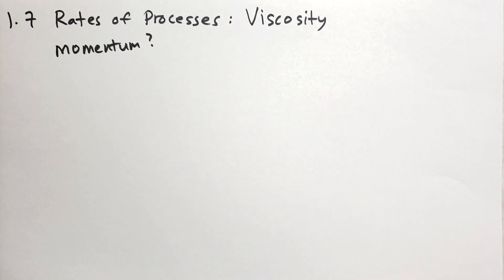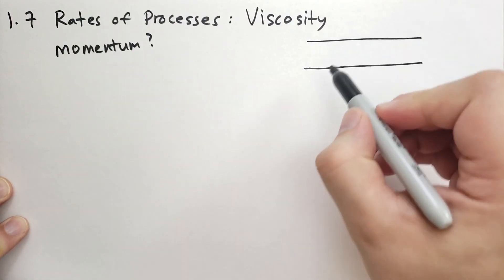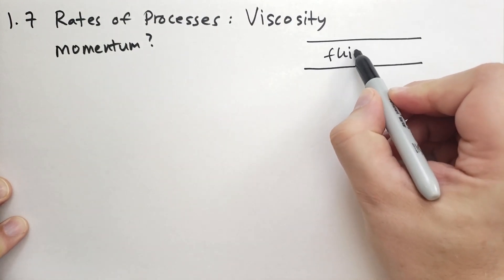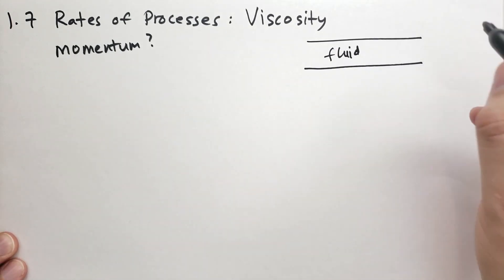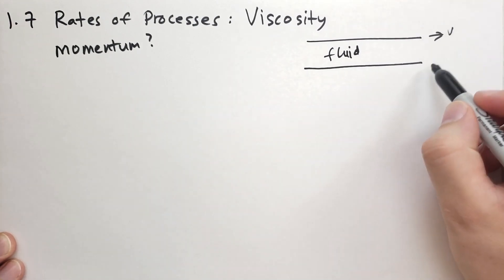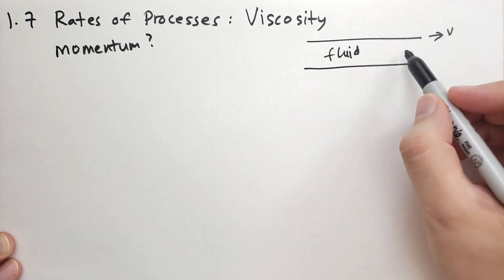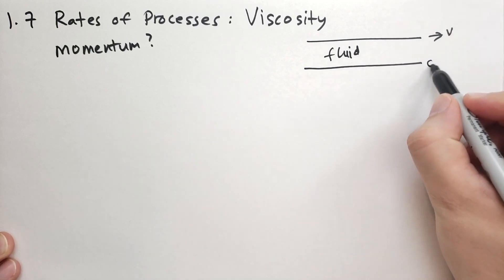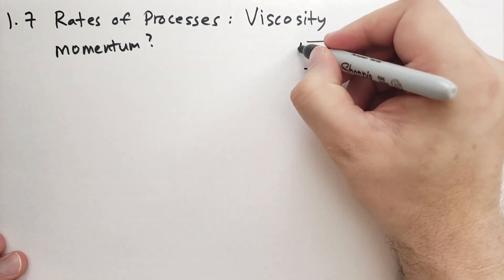So what happens with momentum transfer? In this example, he has two solid plates, and in between these two solid plates he has some sort of fluid. One of these plates is traveling at a velocity, not to be confused with the velocity of the particles in the fluid or the velocity of the fluid as a whole. The other one is stationary with no velocity. In between we have a fluid, a liquid or a gas.